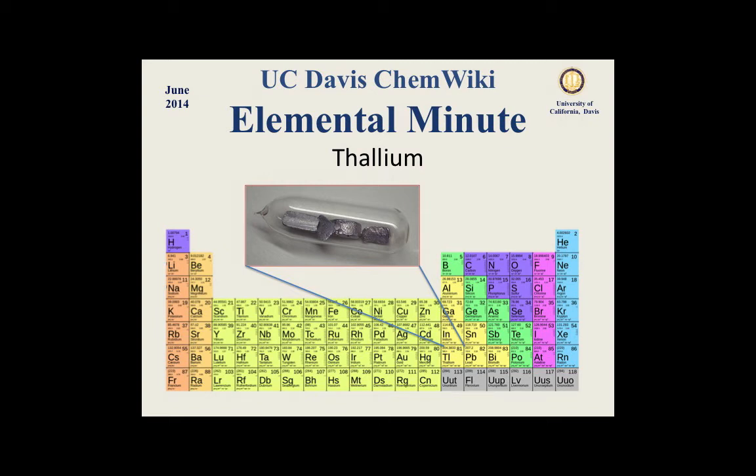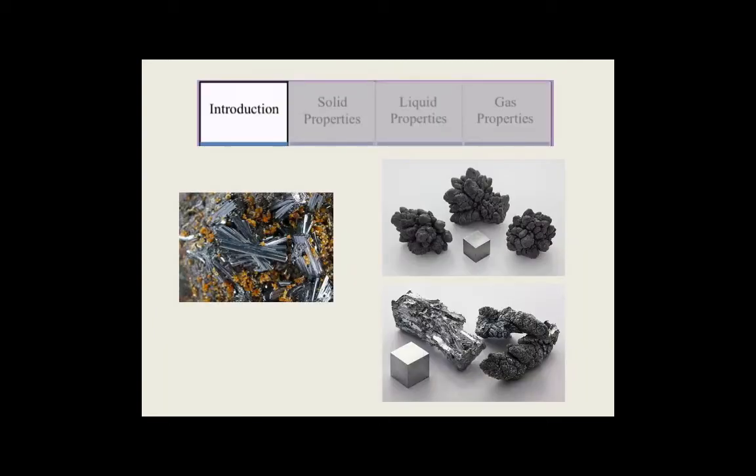Thallium is a soft gray metal that is part of group 13. It is not found freely in nature, but in minerals like crooksite, lorandite, and hutchinsonite.